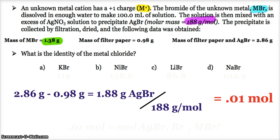If I had 188 grams of precipitate, it would be 1 mole. If I had 18.8 grams, it would be 0.1. But here I have 1.88, so it's 0.01 mole.